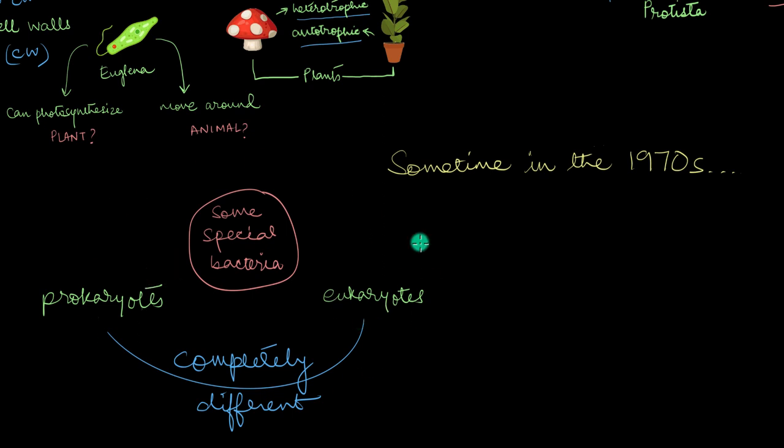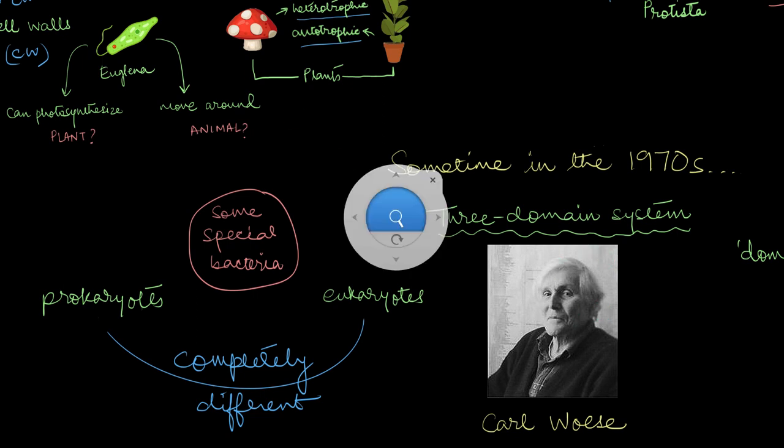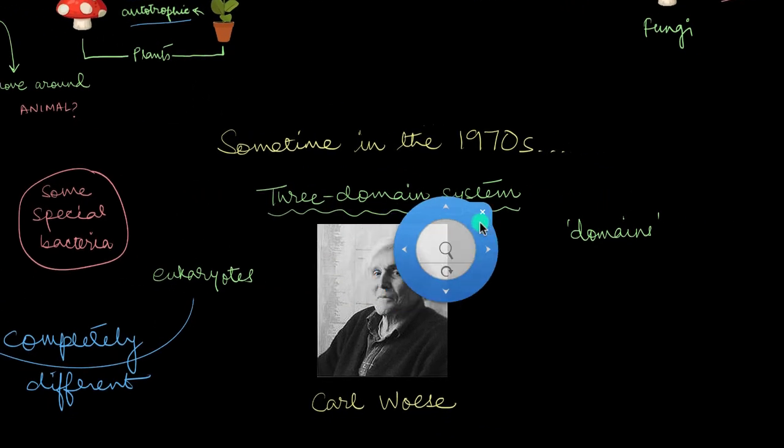Now this whole fact, whatever we just found out, it was pointed out by this American microbiologist named Carl Woese and he significantly changed the entire concept of Monera. He developed a new system where he introduced something called domains, which was a rank that was higher than kingdoms.